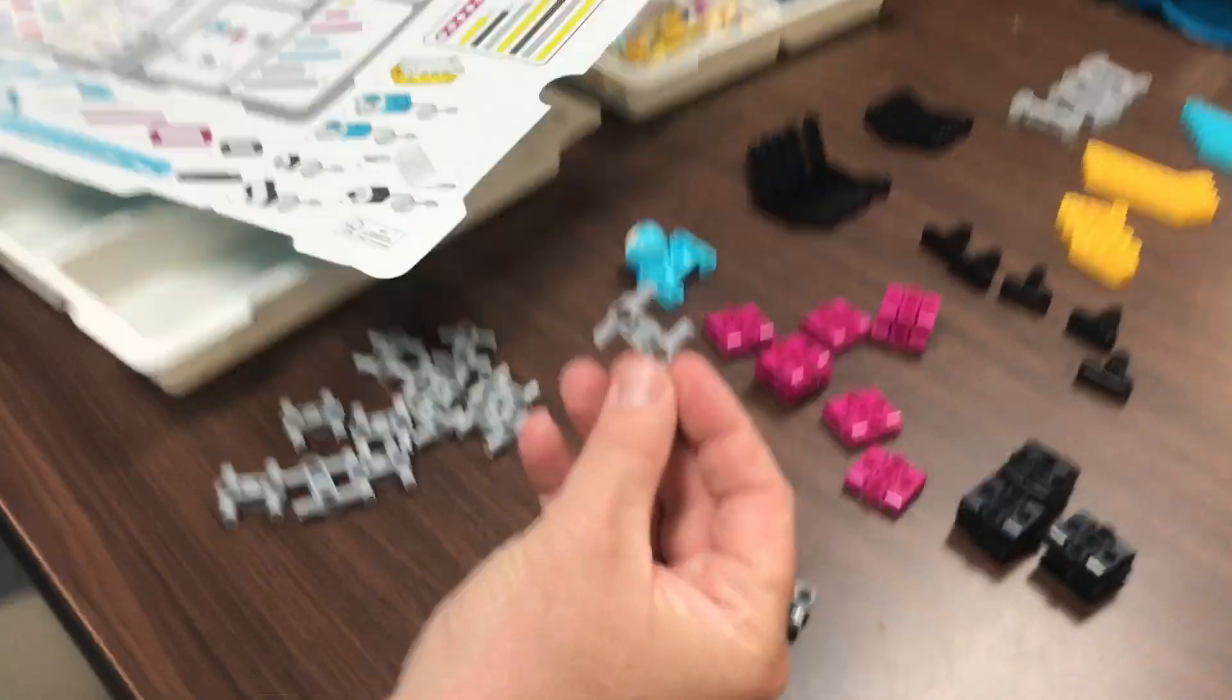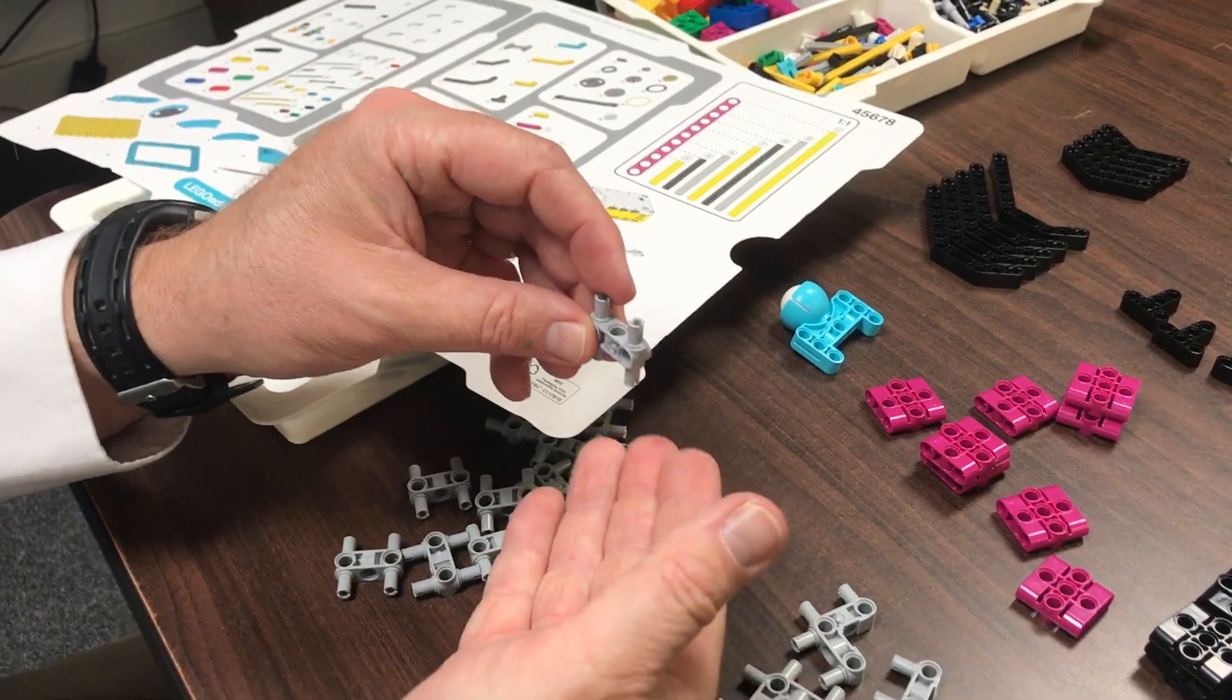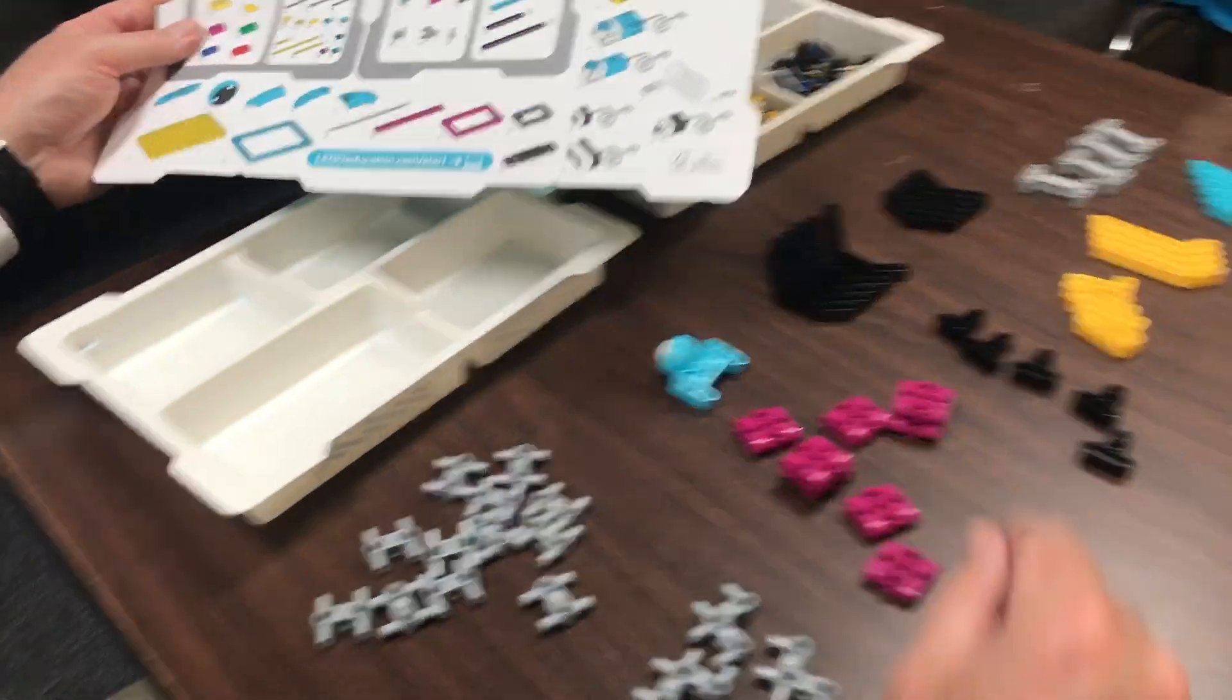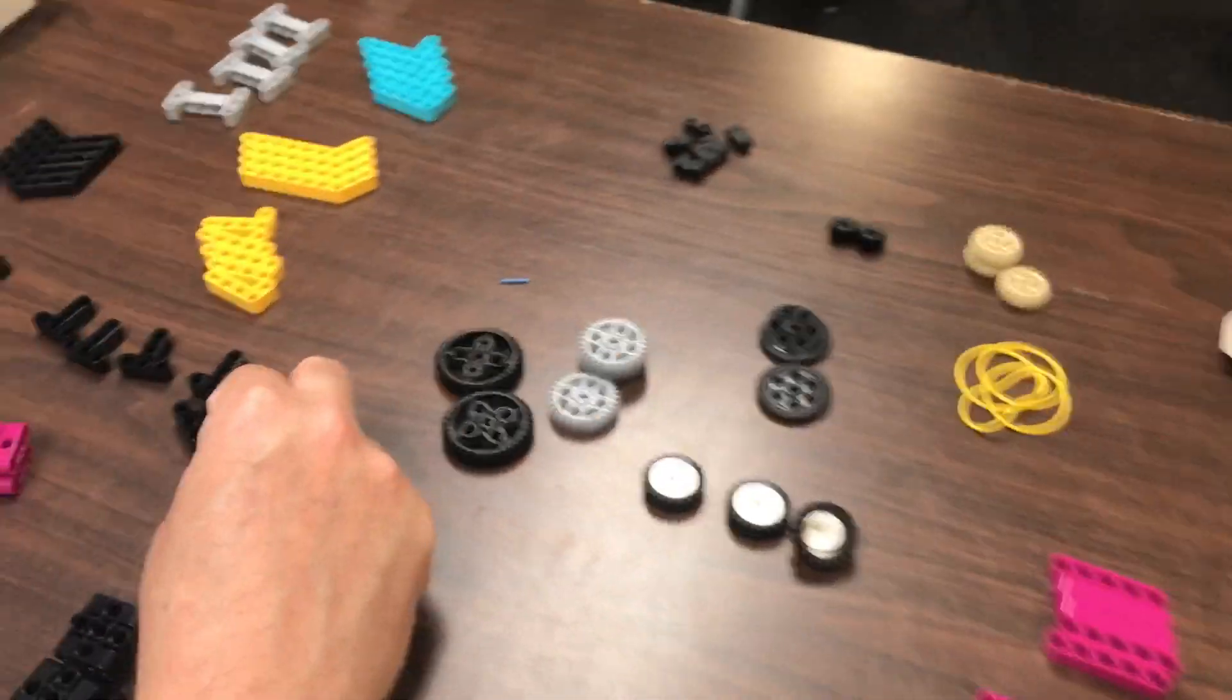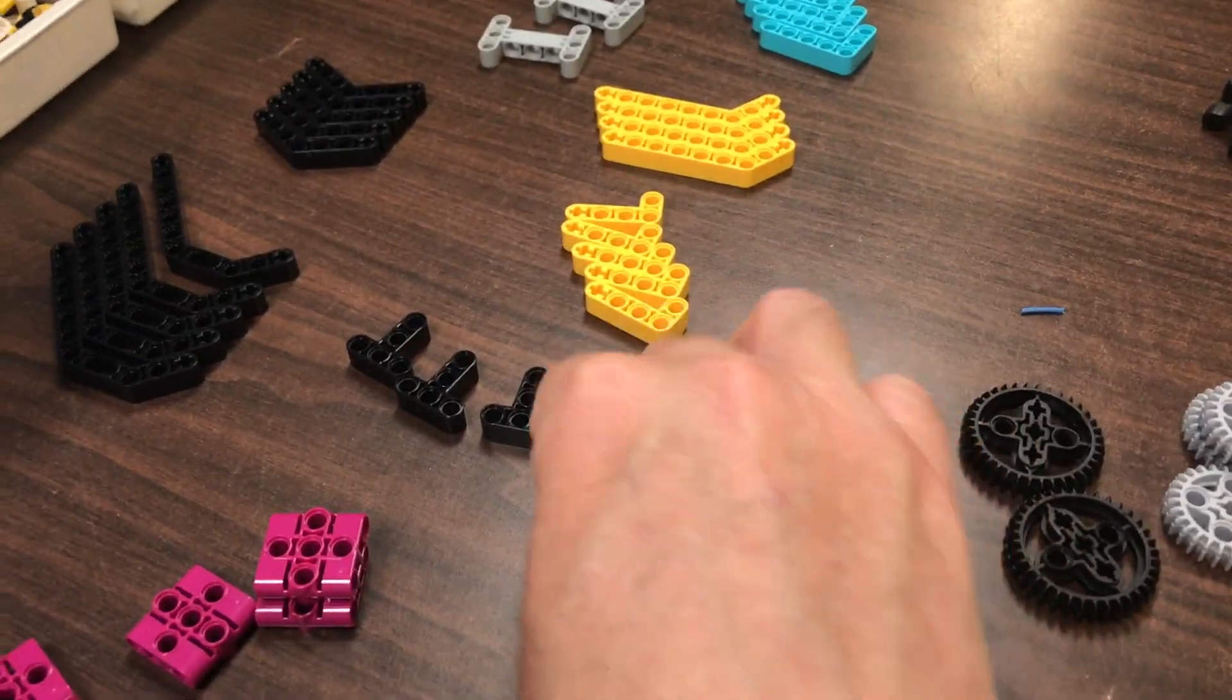I call these the H blocks just because they look like an H. Again, good for building multiple beams up and down but also forward and backward. Then we come to the angle beams. Mostly just use the letters, these are T beams.